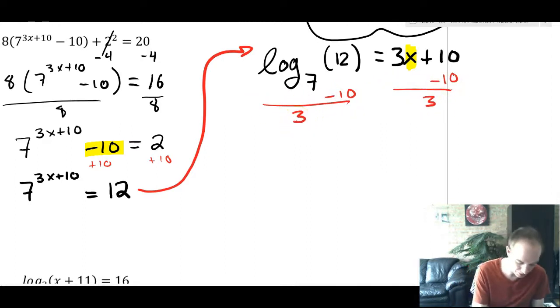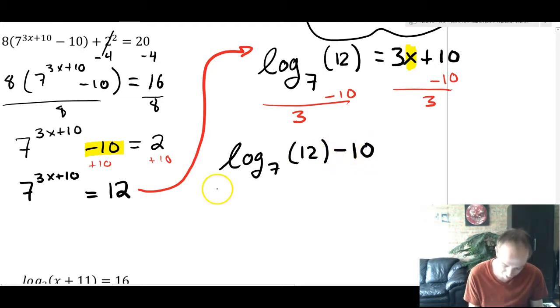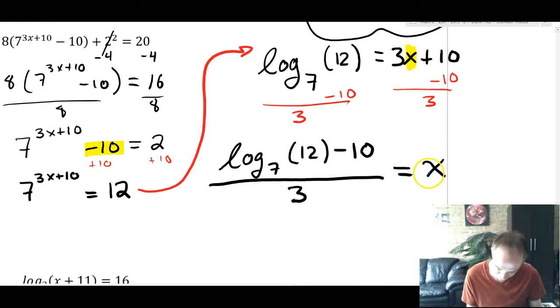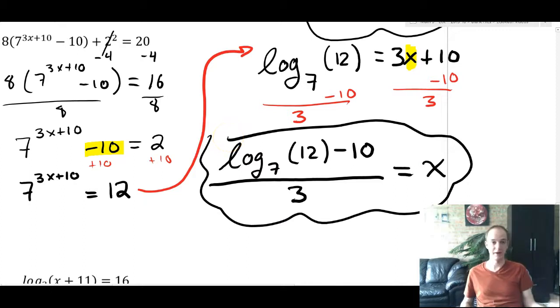And this is really messy, so let's rewrite the final answer like this. That's log base 7 of 12 minus 10. And then the whole thing is divided by 3. And that would equal x. And that's going to be your good, acceptable looking final answer for a problem like this.